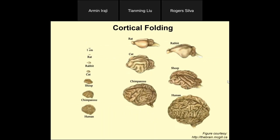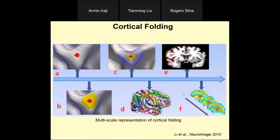Let's start with cortical folding — this is my favorite research topic. I have been working on this topic for 20 years, since I was a postdoc. If you look at the folding of the brain, the cerebral cortex is quite smooth in animals like a rat, and then becomes much more convoluted in cat, sheep, chimpanzee, and human. If you look at the human brain's folding pattern, it's really complex and extremely variable.